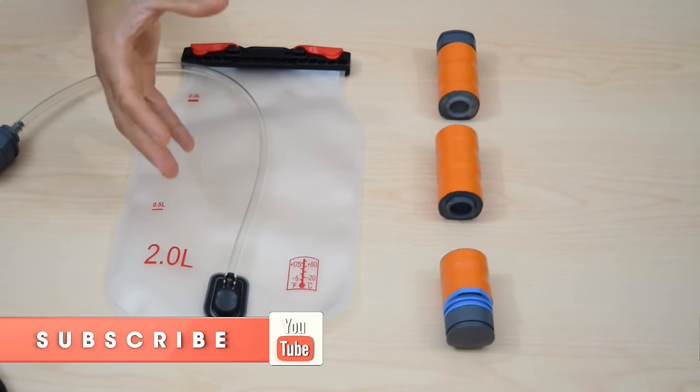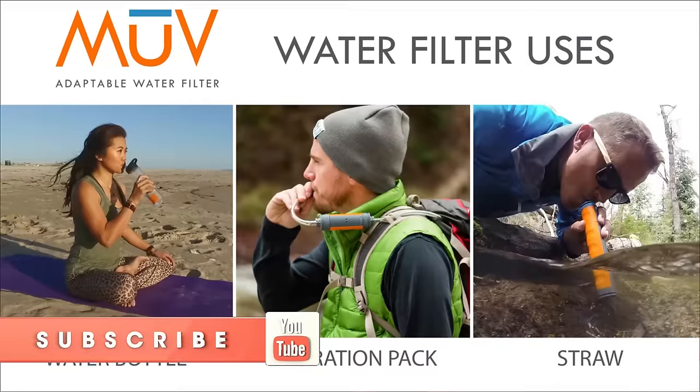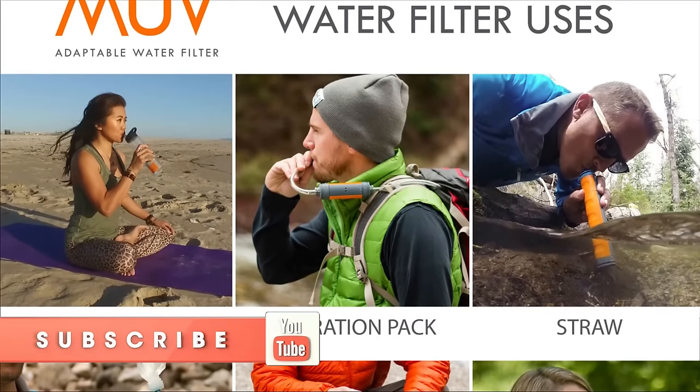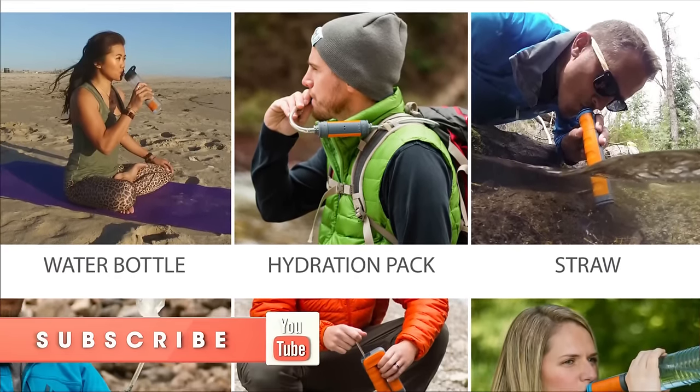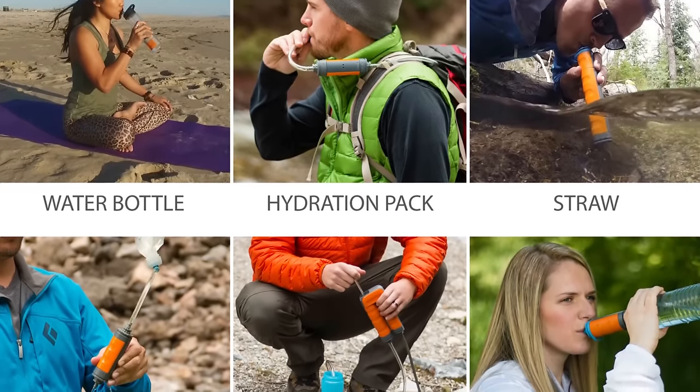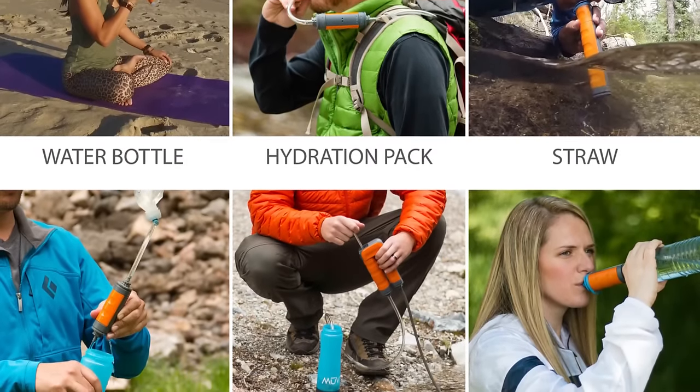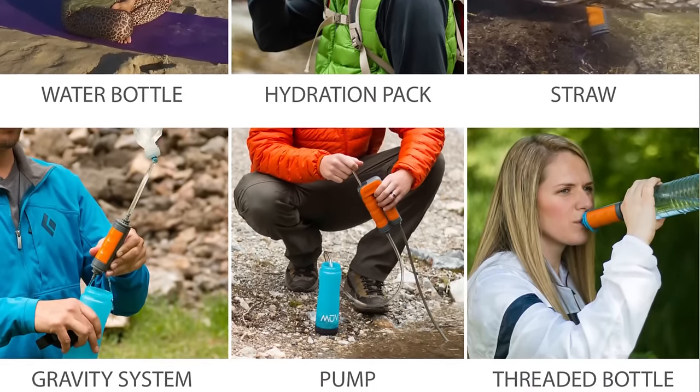Alright. So basically what you're getting here is a modular water filtration system. What Renovo wanted to do was make a water filtration system that you can use in a variety of different configurations. So you can use it on a water bottle, on a hydration pack, drink out of it like a straw like the life straw, or use it as a gravity system.